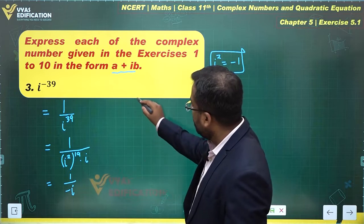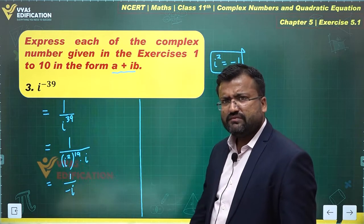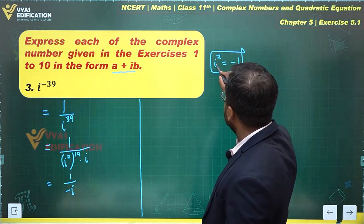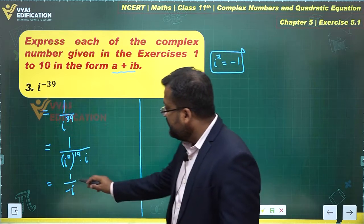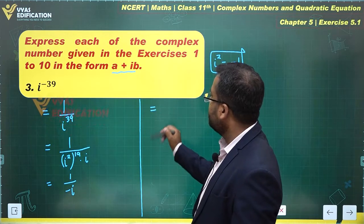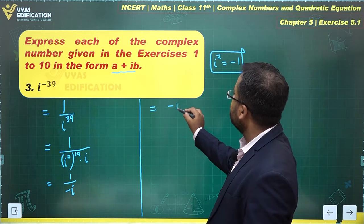The next step: observe that since i squared equals minus 1, this can be further written as minus i squared in the denominator, with minus i at the bottom.